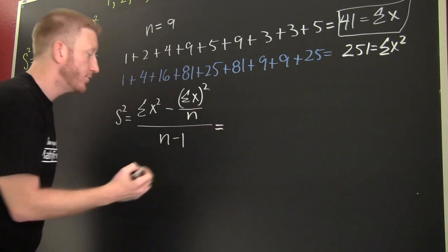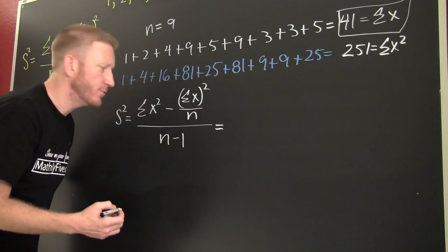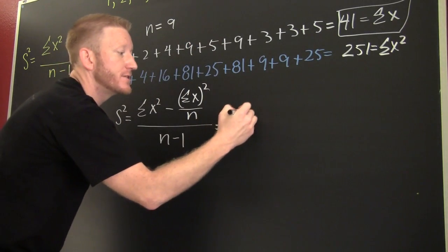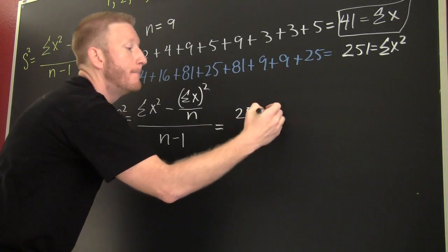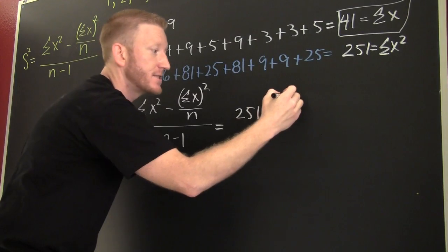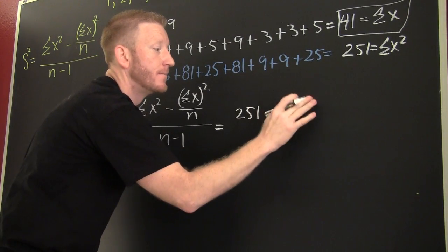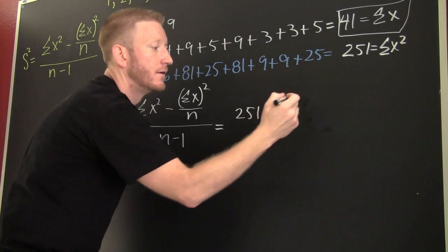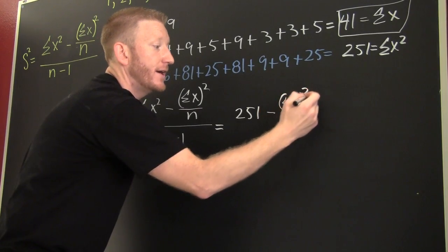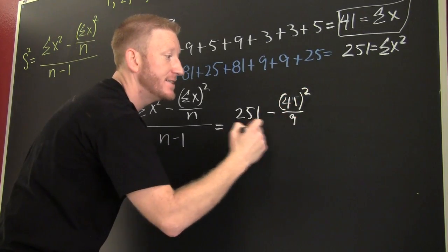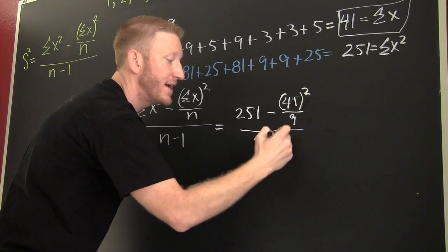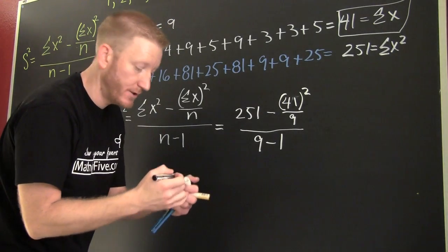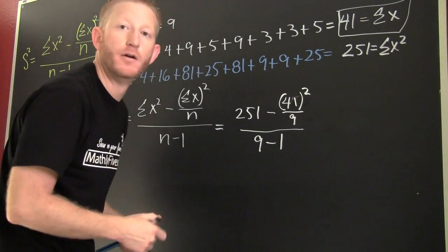Ready? The sum of the x's squared was 251 minus the sum of the x's, this is 41, squared divided by 9, divided by 9 minus 1. You ready? Finish him!